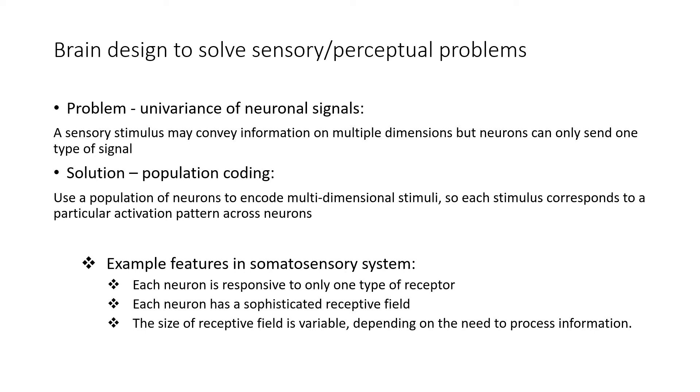For example, in the somatosensory system, a touch of the arm conveys the exact location of the touch, the magnitude of the pressure, the temperature of the object touching your arm, and so on.